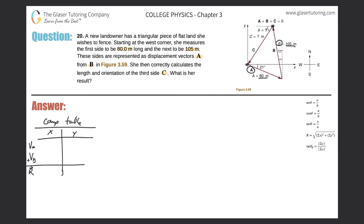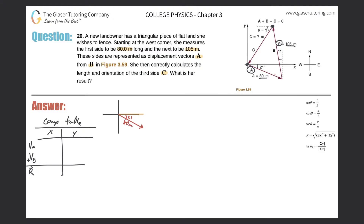Let's first focus on vector a. I'll draw a coordinate system with a y-axis and x-axis, and on this coordinate system I'm going to draw vector a. Vector a is drawn at an angle of 21 degrees south of east, so this angle in here is 21 degrees. The magnitude of this vector is 80 meters. I want to find the x component, which is positive, and the y component, which should be negative because it's going in the negative y direction.